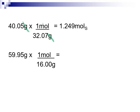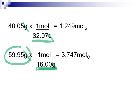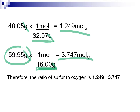Do the same thing for oxygen. Remember, we don't know how many oxygens there are, so you might be tempted to use the diatomic molar mass of 32, but we're trying to find out how many oxygens there are. We use the molar mass of the oxygen atom itself. So with 59.95 grams of oxygen, the grams cancel out and we convert to moles. In this sample, we find a mole ratio of 1.249 moles of sulfur to 3.747 moles of oxygen.